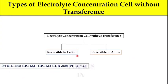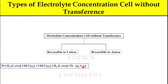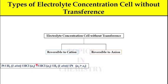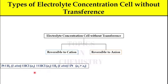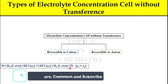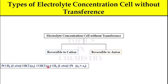Here is the example of reversible to cation: Pt | H₂ (1 atm) | HCl (activity A₁) ‖ HCl (activity A₂) | H₂ (1 atm) | Pt, where A₂ > A₁. The most important part here is the double vertical line, which indicates a salt bridge is used. These two electrolyte solutions are not in direct contact with each other. Also note that the electrode concentrations are the same, but the electrolyte concentrations are different.